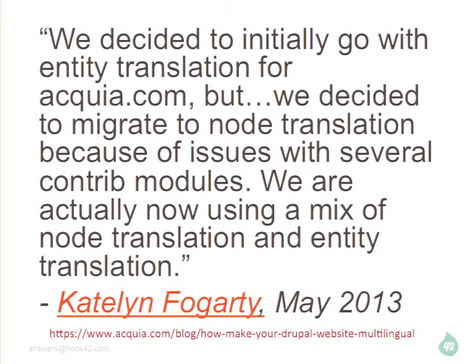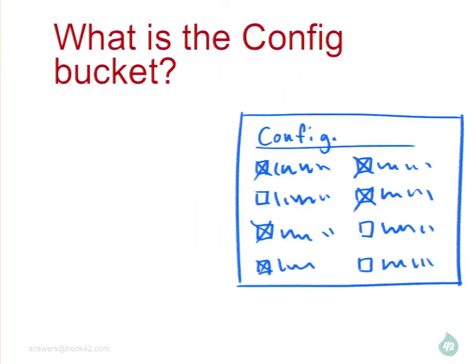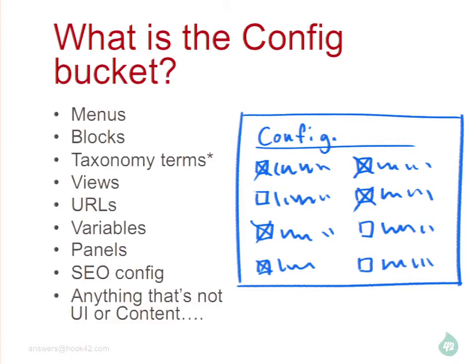Now we're going to talk about the config bucket, which is kind of crazy because it's anything that's not what I just talked about — not the text strings and not the entities. There's a lot in Drupal: menus, URLs, panels, variables, and all sorts of stuff. Anything that's not field collections or entities — we consider that the config bucket.